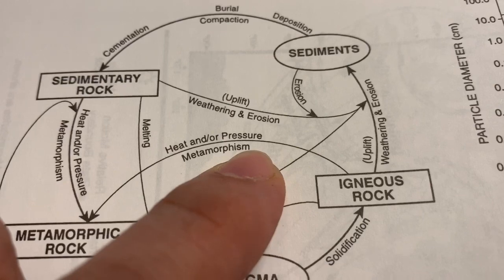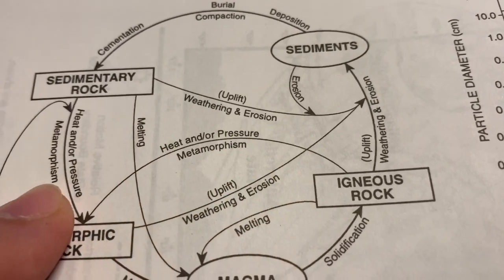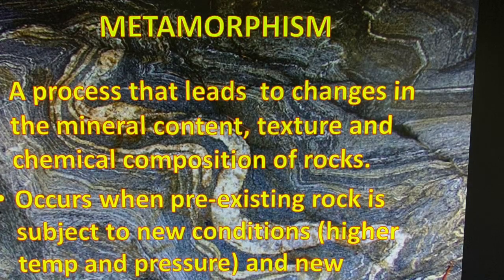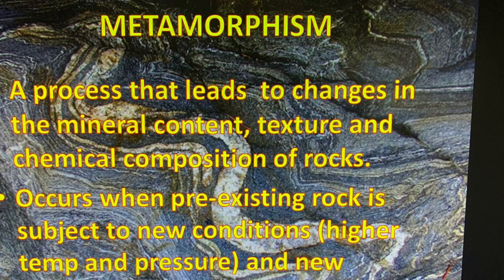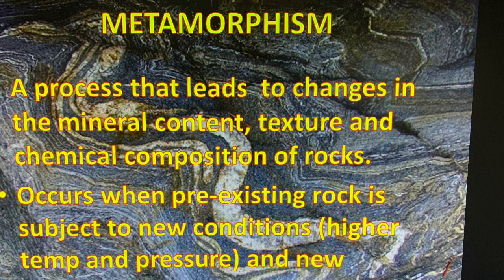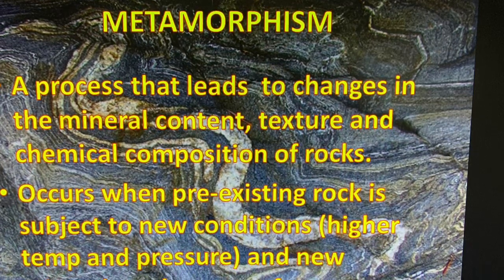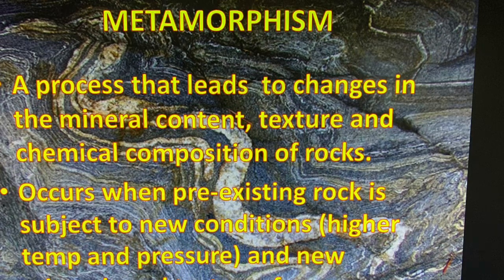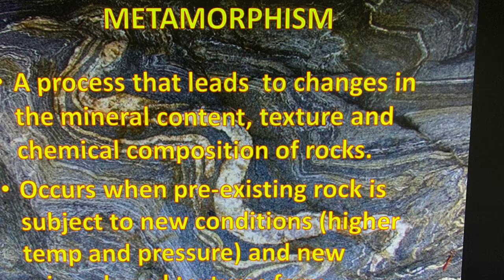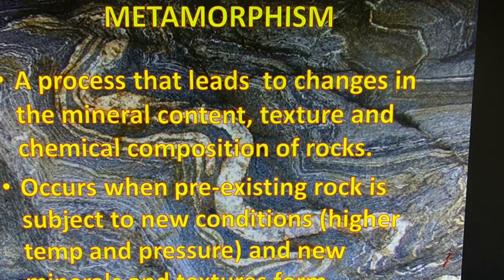Metamorphism is the actual changing from one rock type to another — this is a really important word. The definition is: it's a process that leads to changes in either the mineral content (feldspars, quartz, olivine), the texture — which is the size and arrangement of crystals — or sometimes even the chemical makeup of the rock, where atoms themselves migrate in or out.